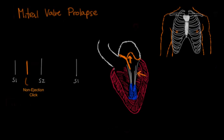What causes the click: as the left ventricle begins to contract, the mitral valve closes normally to cause S1. Then as pressure builds, the valve accelerates into the left atrium. When it stops abruptly — held by the chordae tendinae — there is rapid tensing of either the chordae or the leaflet, and that causes this little click.